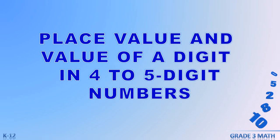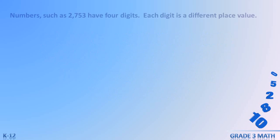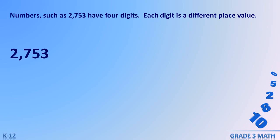Place value and value of a digit in four to five digit numbers. Numbers such as 2753 have four digits, and each digit has a different place value. The first digit is the thousands place — it tells you how many sets of 1000 are in the number. The number 2753 has two thousands.